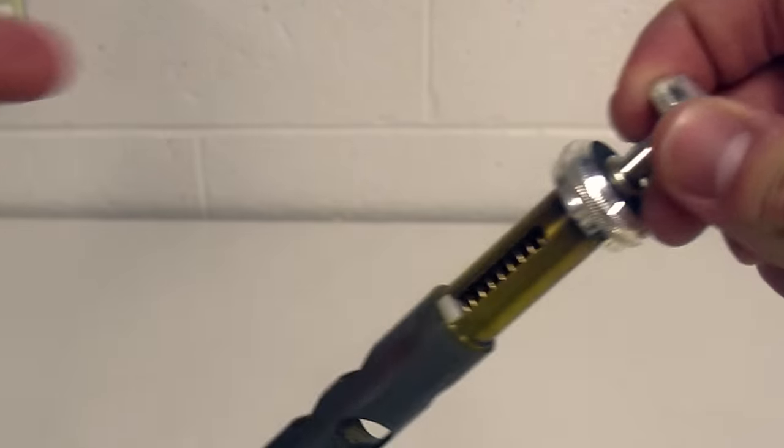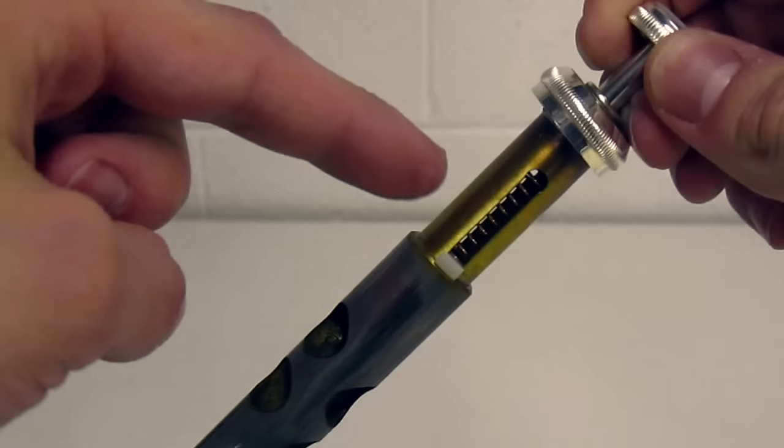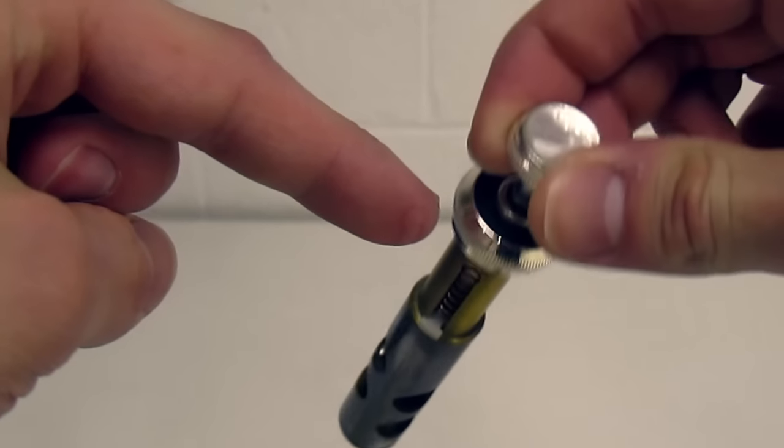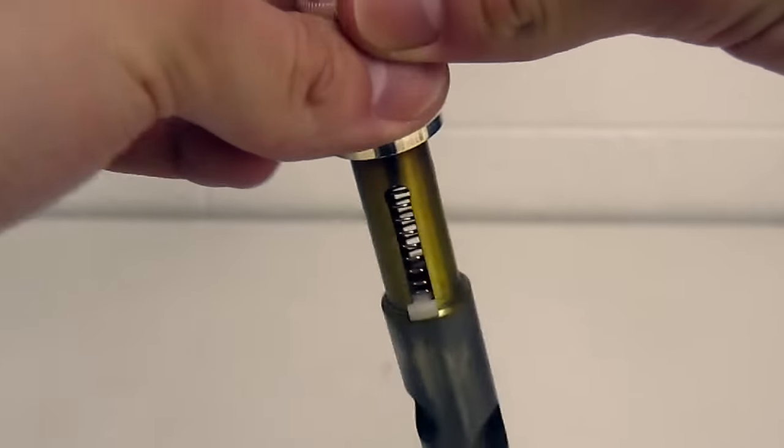This gray portion of the valve is made out of Monel metal and is very sensitive, so again do not drop this. Here we can see the spring and usually there's felt around here, on my model there's not.